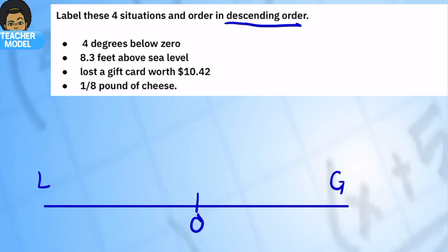So I just want you to keep that in mind as we're going through this problem, that we don't want to go from least to greatest, we're actually going from greatest to least because we want descending order. All right, so let's look at each situation and I'm going to try to represent them as a number. So I have 4 degrees below zero, that's easy, that's negative 4. 8.3 feet above sea level, so 8.3. And I'm going to do the same thing as before, let's make sure we can compare them. We've lost a gift card, so this is definitely going to be a negative, so negative 10.42.